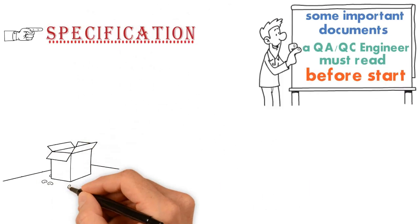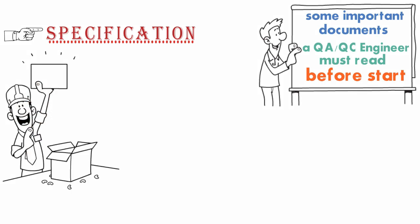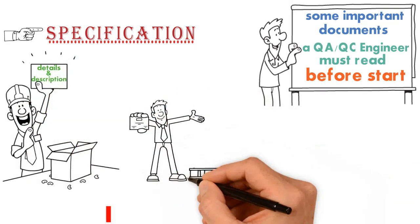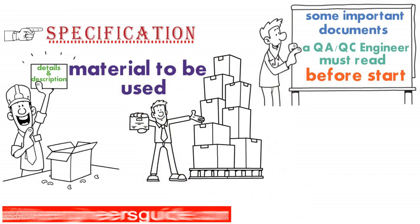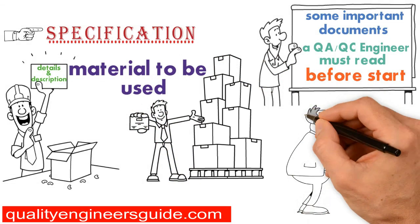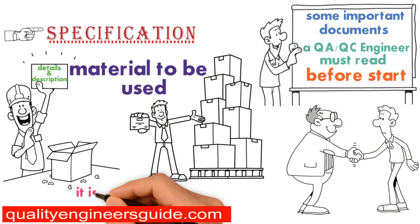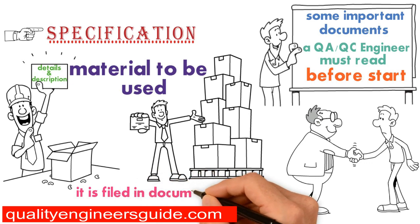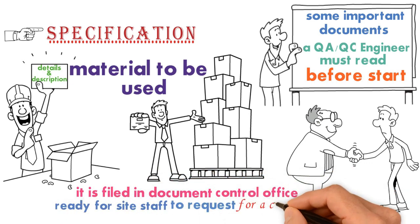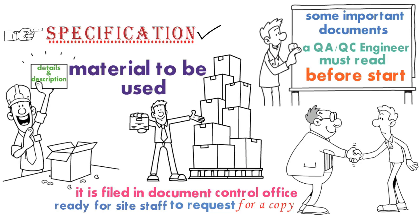Specification. The specification is a set of requirements or detailed description of work to be done and materials to be used in a project. It is given to the contractor from the employer during the tendering period. It is filed in the document controller office, ready for any site staff to request a copy. This document shall be the first one to read by the QA or QC engineer.